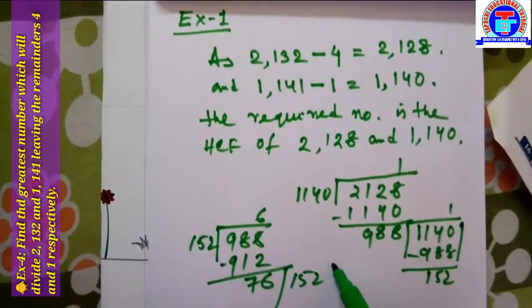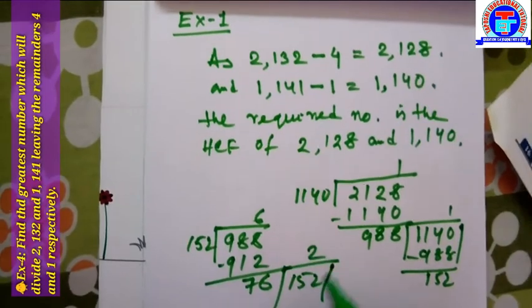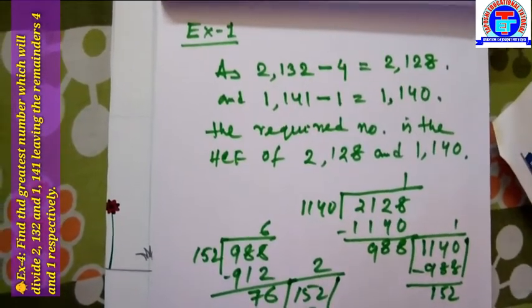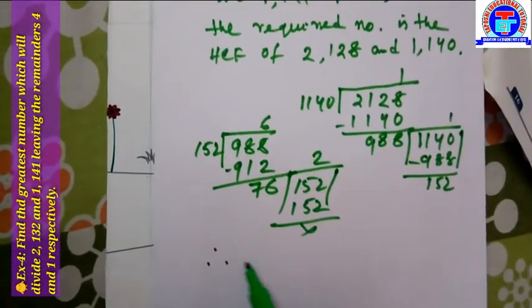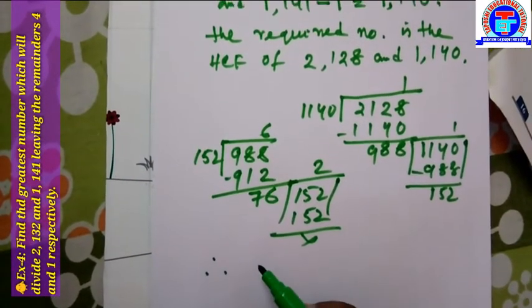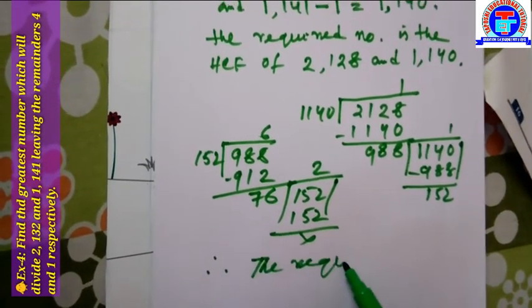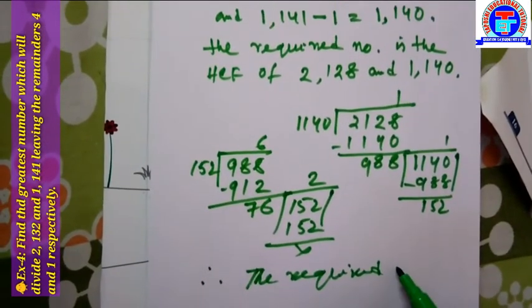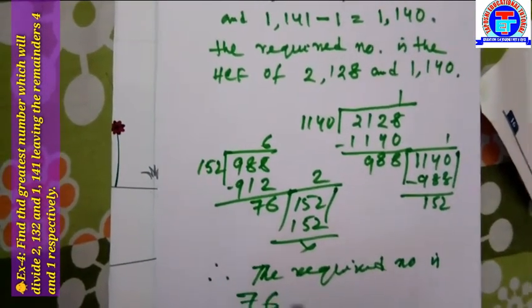Then 152 divided by 76: this divides exactly with no remainder. Therefore the required number is 76. That is the answer.